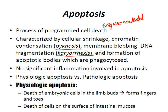Very importantly, there is no significant inflammation involved with apoptosis, as opposed to necrosis where there's a ton of inflammation. There are two types of apoptosis: physiologic and pathologic. For physiologic, there are six causes we'll cover.